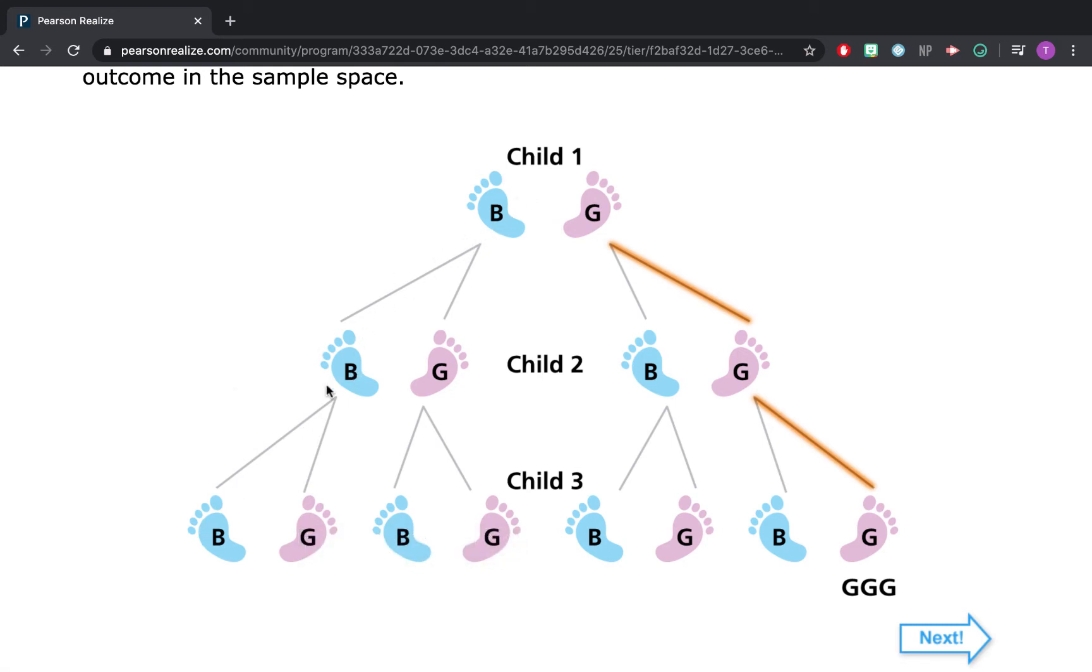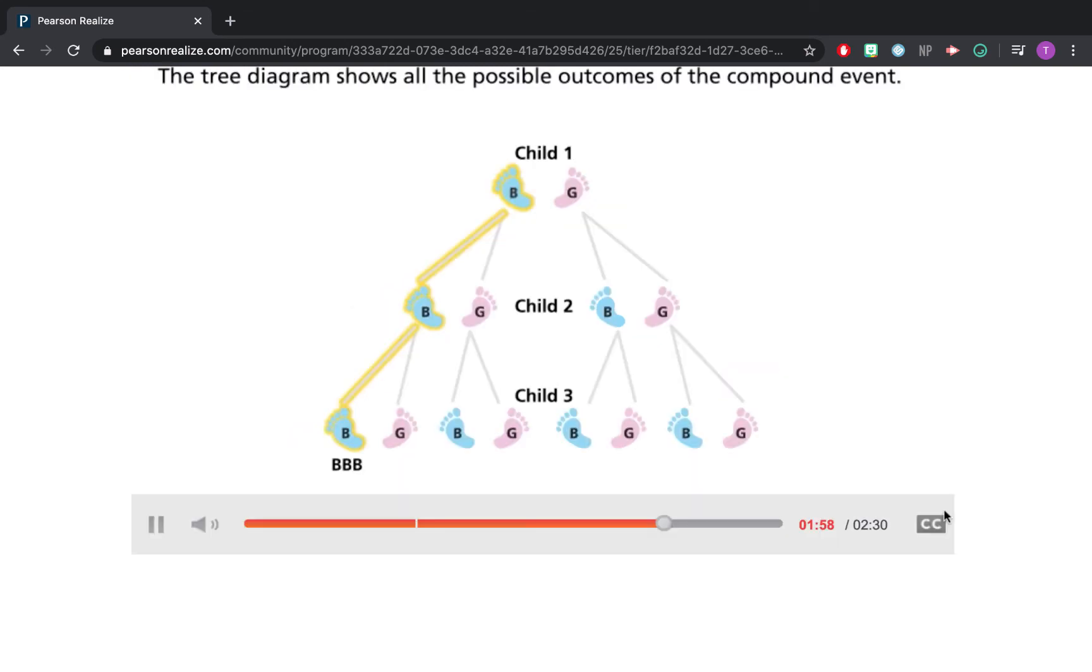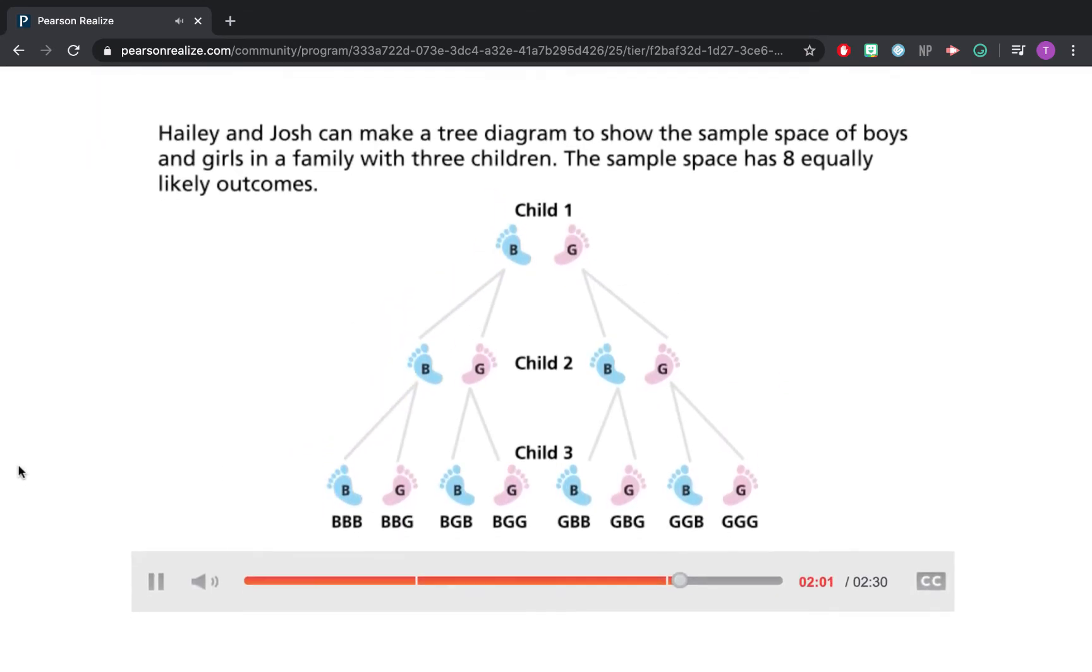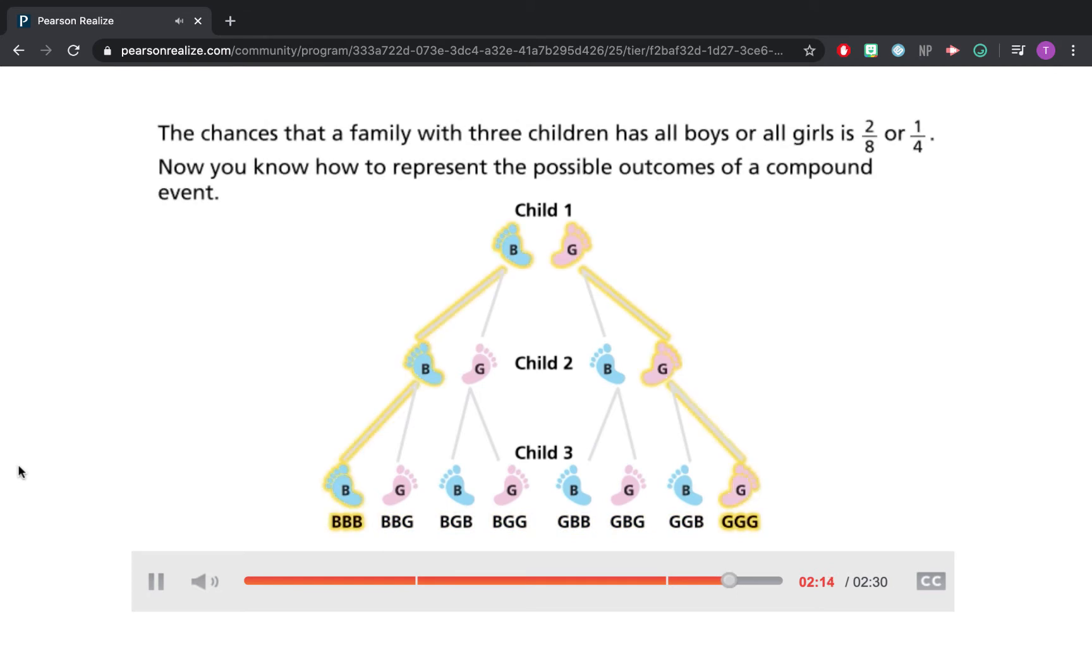Each individual outcome having a one out of eight shot of happening. For instance, the probability of getting all three boys is one out of eight. The probability of getting all three girls is also one out of eight. When you're looking at something like the probability of getting two boys, you need to follow any branch where you get two boys. That would represent a three out of eight shot. Haley and Josh can make a tree diagram to show the sample space of boys and girls in a family with three children. The sample space has eight equally likely outcomes. The chances that a family with three children has all boys or all girls is two out of eight or one fourth. Now, you know how to represent the possible outcomes of a compound event.